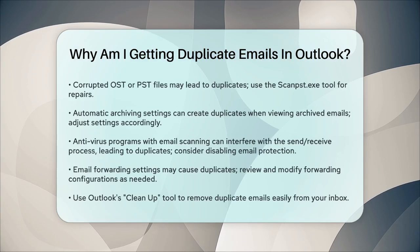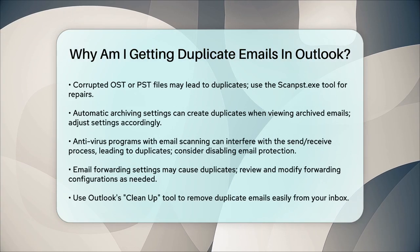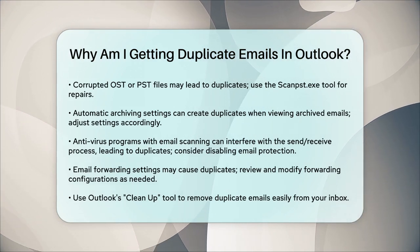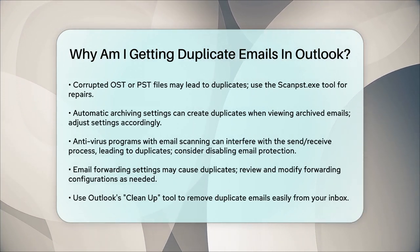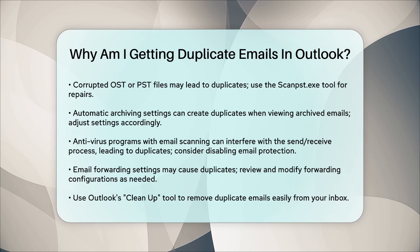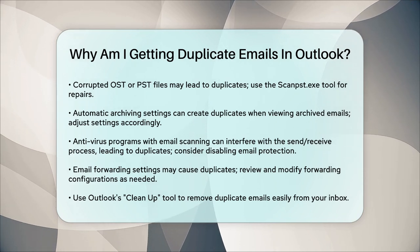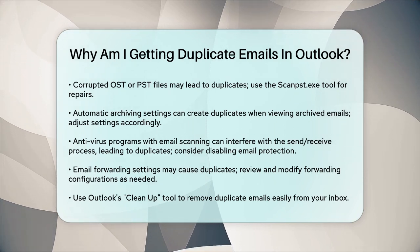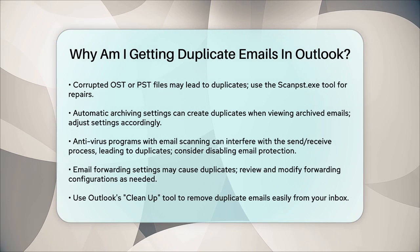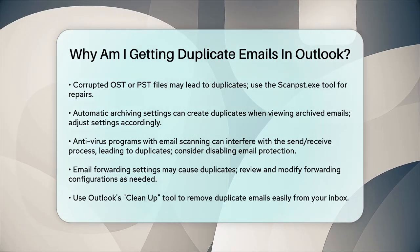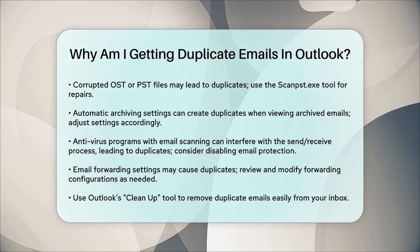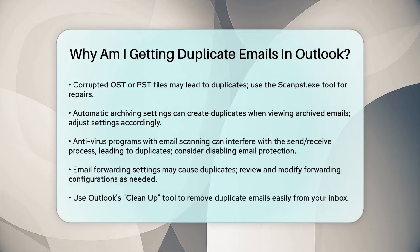If you have set up Outlook to automatically archive messages, it can create duplicates when you view your archived emails from the inbox. Make sure to adjust your archive settings to avoid this. Antivirus programs with email scanning features can interrupt the send-receive process, causing duplicates — disable email protection when the antivirus is running to avoid this issue.